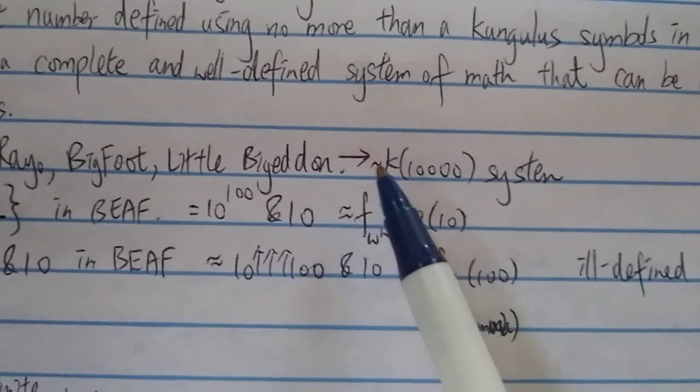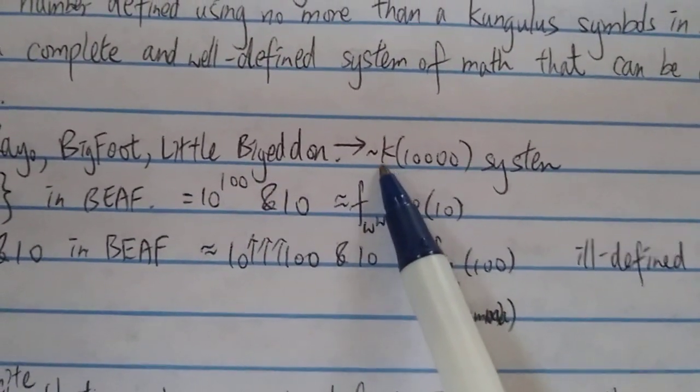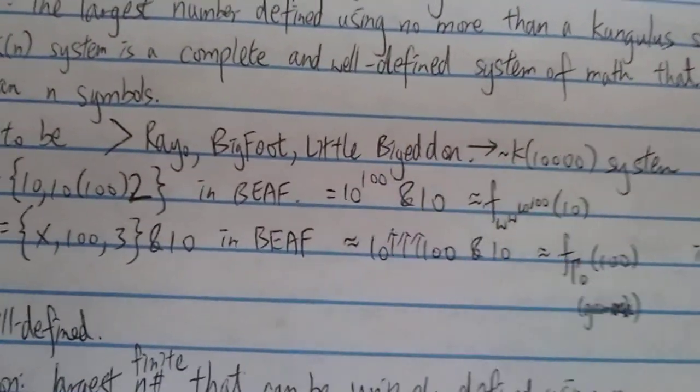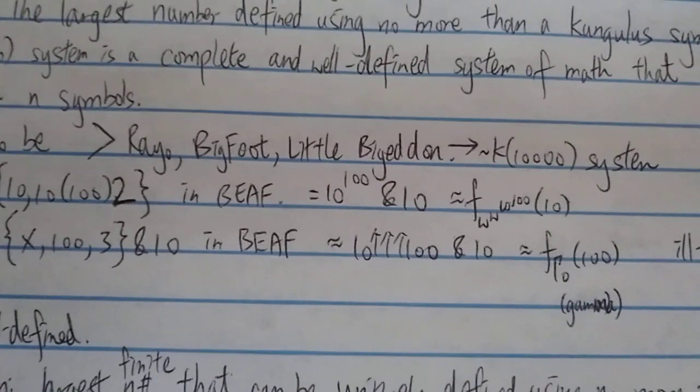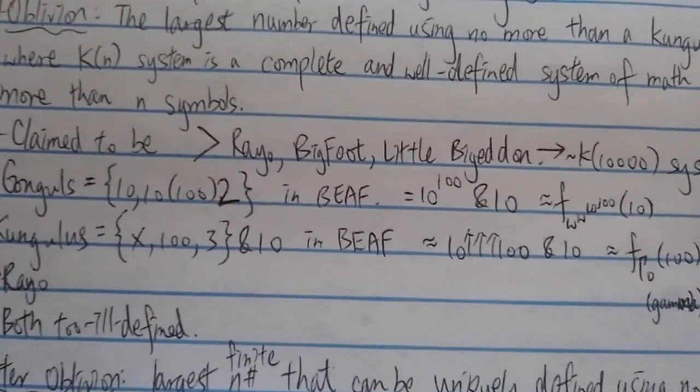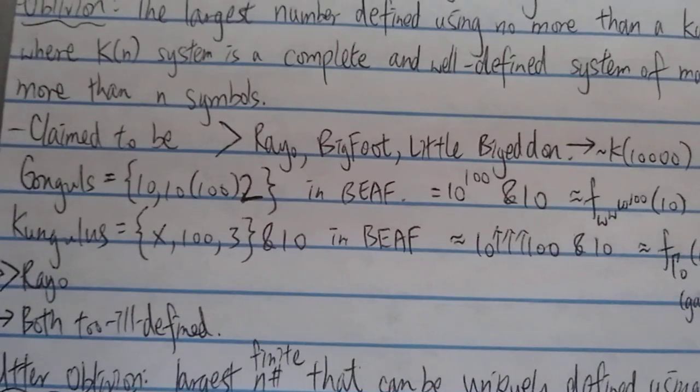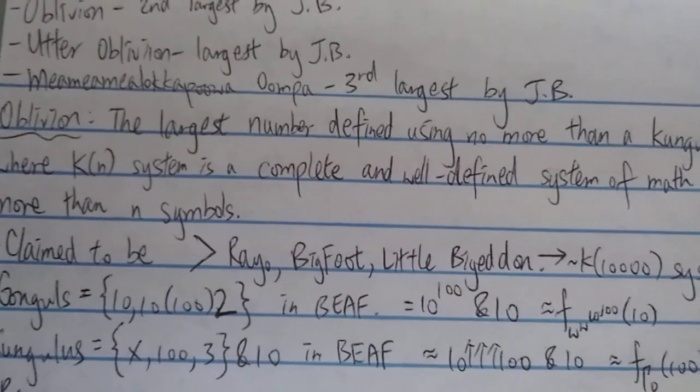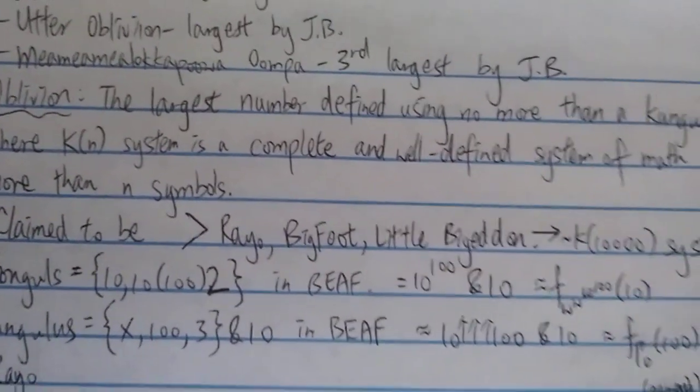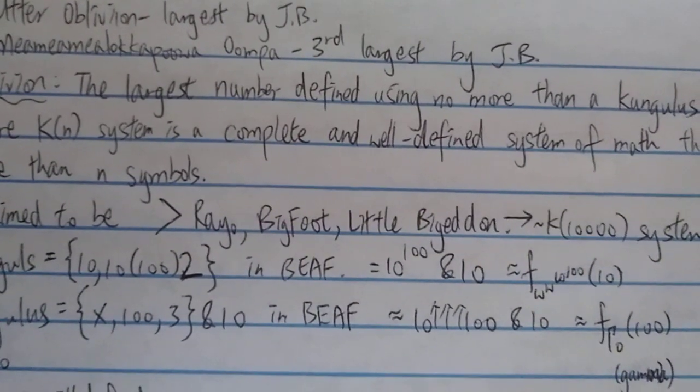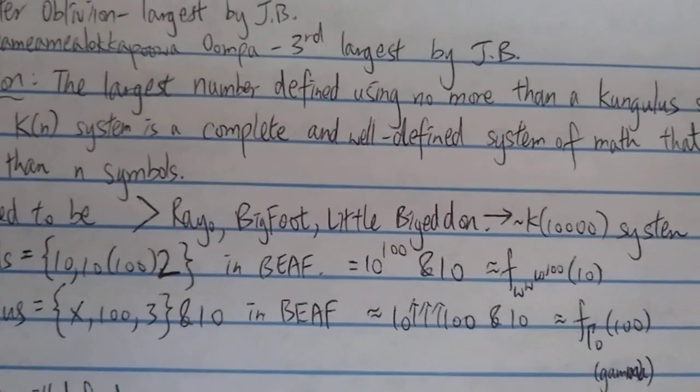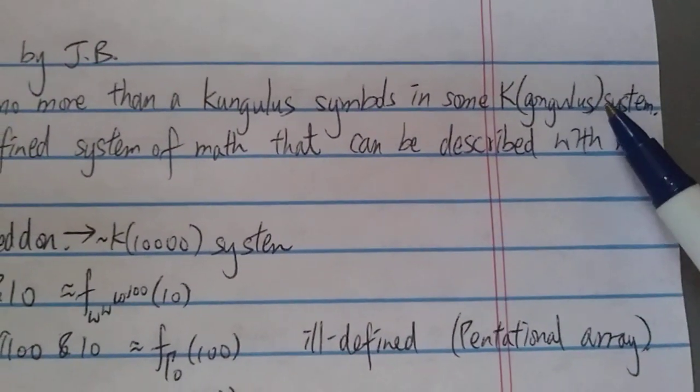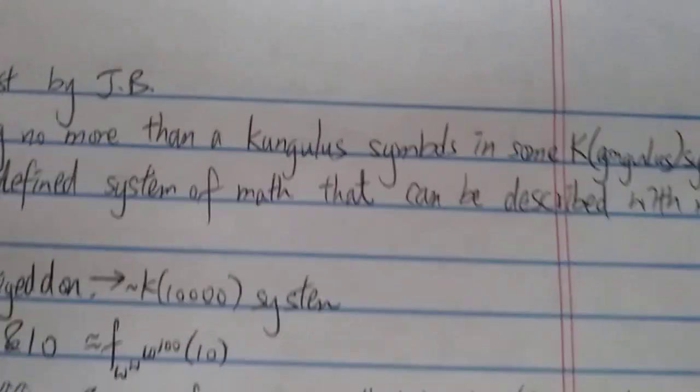Which Jonathan Bowers estimates is around somewhere using the K of 10,000 system. So clearly his number, his oblivion, is way bigger than even the little bigeddon. But since clearly this is an ill-defined number because he doesn't even use - he is - the definition is only 10 or 3 lines long, so basically less than a paragraph, so everything is not defined by himself.